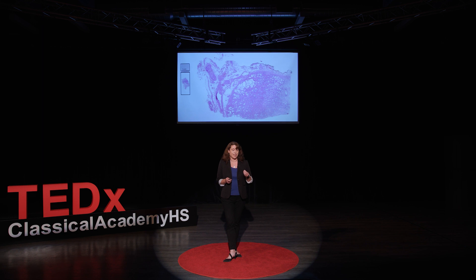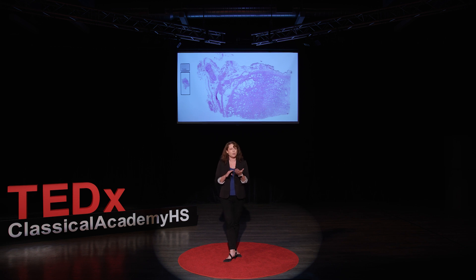More recently, pathologists have started to use digital images — very large images of the microscope slide — that allow them to look at the pathology on their computer screens. Here we have an image of a piece of prostate tissue. That sample would have been sent to the lab, sliced very finely into a thin tissue section, placed on a microscope slide, and then stained with special dyes called hematoxylin and eosin, which allow us to visualize the tissue structure more easily.